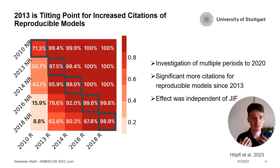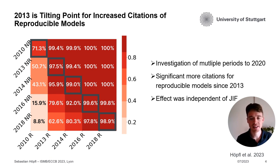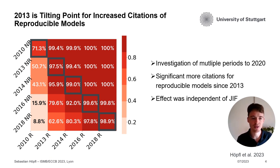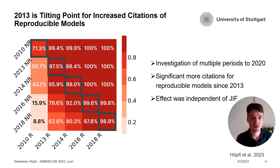We compared multiple time periods against each other. The time shown is always the starting point, and all periods were investigated up to 2020. For example, in the period starting 2010, we investigated papers published from 2010 up to 2020. Comparing reproducible models on the x-axis against non-reproducible models on the y-axis, we find a significantly higher citation count for reproducible models starting from 2013 — always more than 95% credibility for a higher citation count in the reproducible models group.